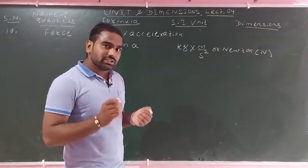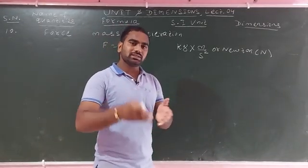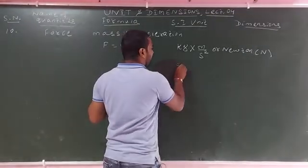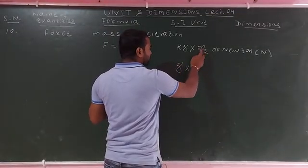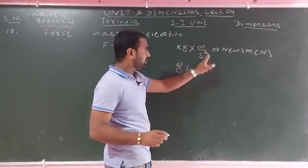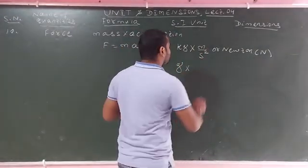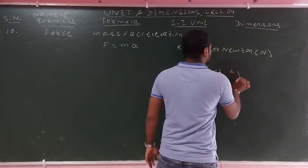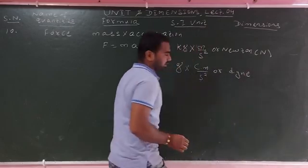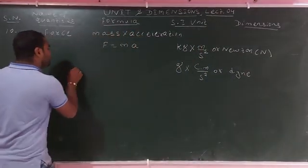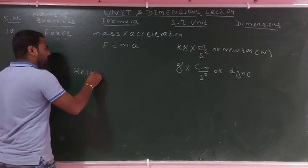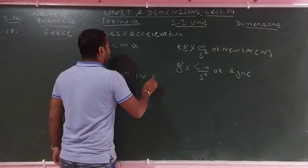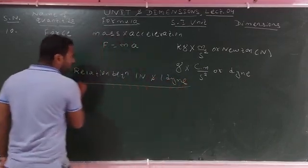In CGS system, the unit of force is dyne. The acceleration in CGS is cm/s². You can see the relationship between Newton and dyne — 1 Newton is much larger than 1 dyne.